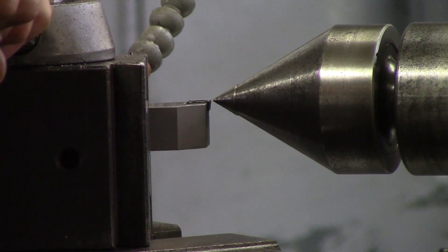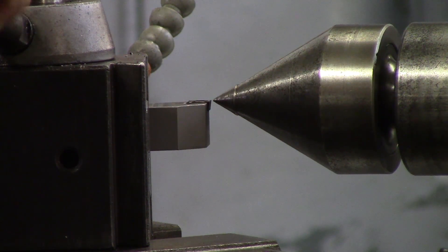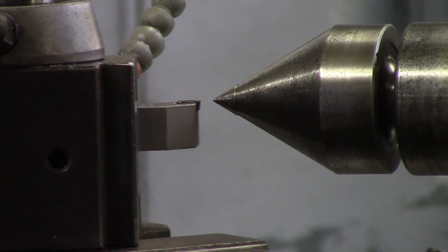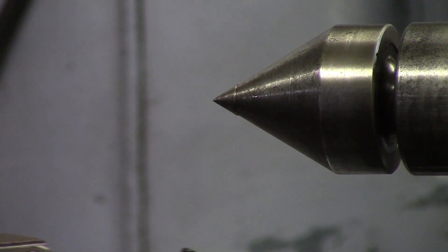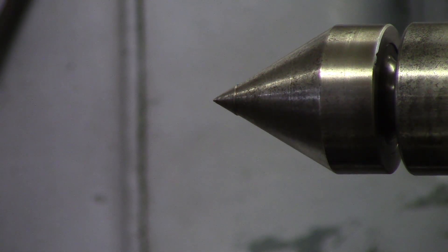And this is going to be important when you are facing and things of that nature because if you are below the center line of your part you are going to leave a little stud sticking up whenever you are facing it and it may even rub your tool and chip your tool. So being center line is very important.